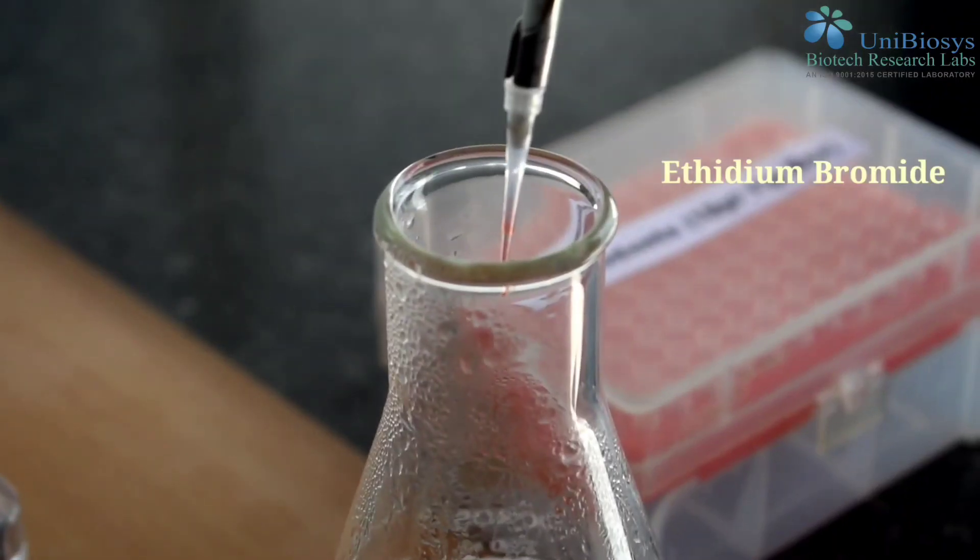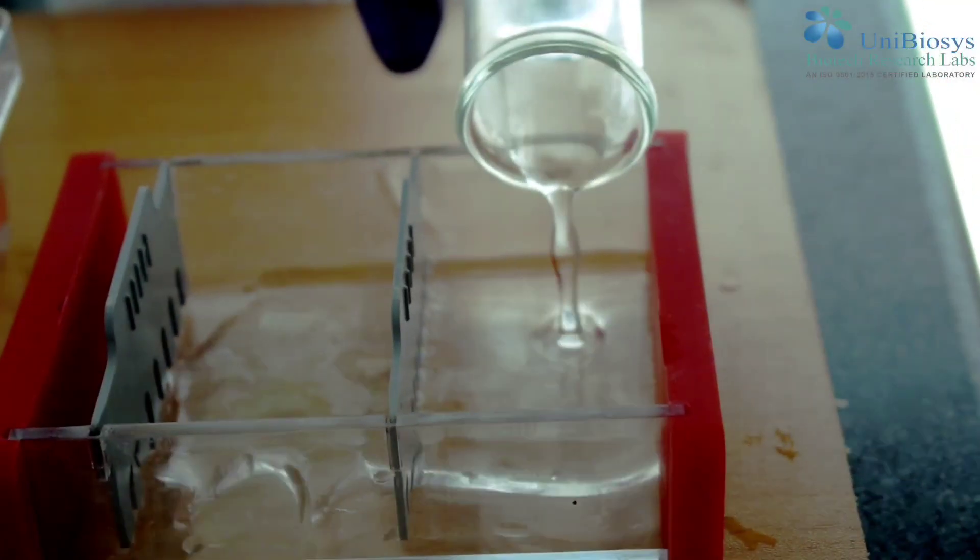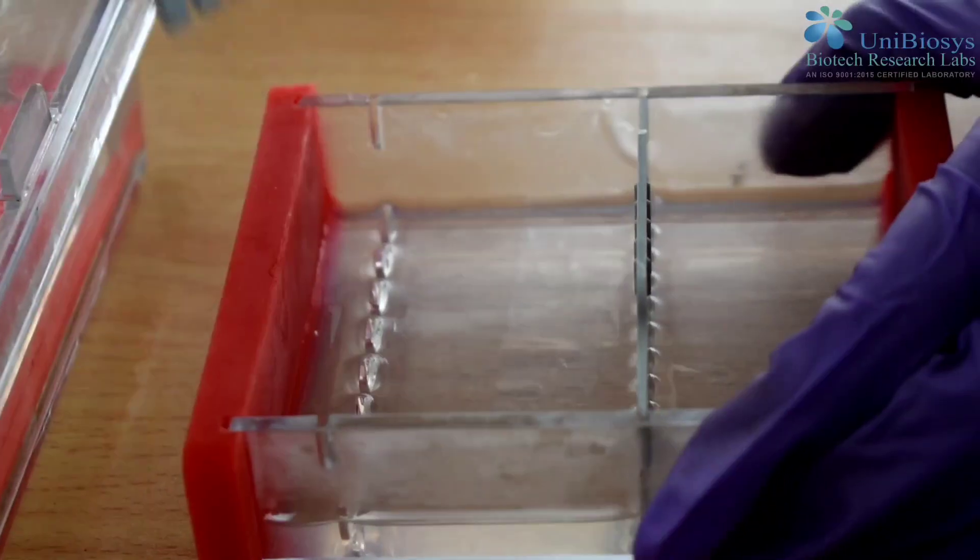After boiling and cooling, agarose is mixed with ETBR and poured into the casting tray. Once solidified, the gel is used for electrophoresis.